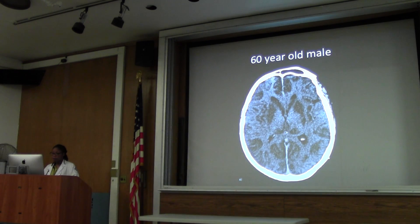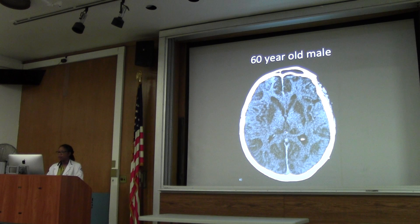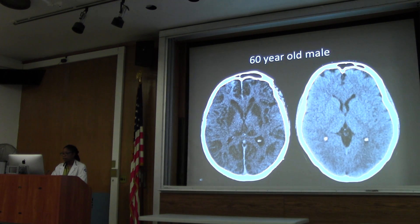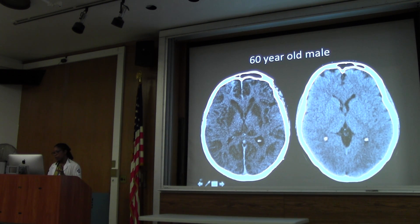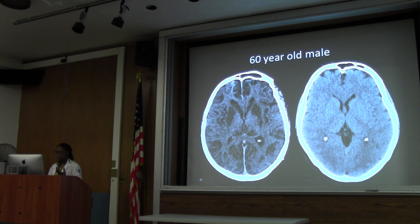Here's another important case - a 60-year-old male. This is classically what they talk about as reversal of grey-white matter. If you look carefully, the putamen, the basal ganglia, and the thalamus should all be lighter than the brain matter, but here they are very dark.